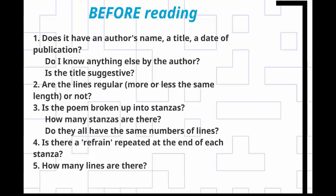Just by looking at the poem on the page we will be able to see if the lines are regular — if they're more or less the same length or not. We can also see whether the poem is broken up into stanzas, how many stanzas there are, and how many lines are in each stanza. There may be unequal numbers of lines or a refrain repeated at the end of each stanza, which is more common in earlier poetry. We can also tell how many lines there are in the poem before we even read it, so there's a lot of practical information we can glean. We should note these things down and they will help us build up our overall picture of the poem.